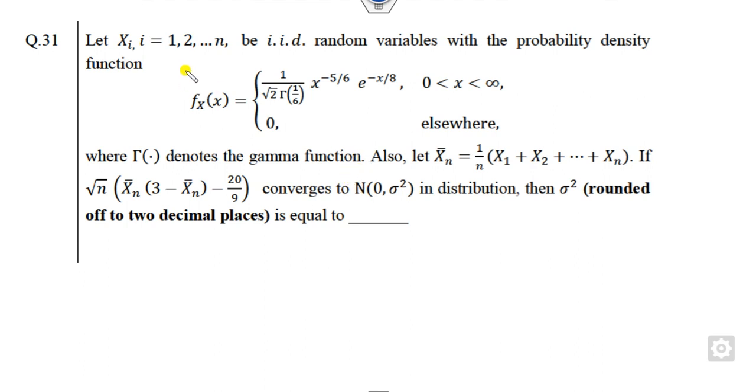Whenever there is a probability density function, think about which distribution is here. If you look, there is a gamma function. This is the pdf of the gamma distribution. So if you compare them, alpha is nothing but 1 by 6, and beta is nothing but 1 by 8.